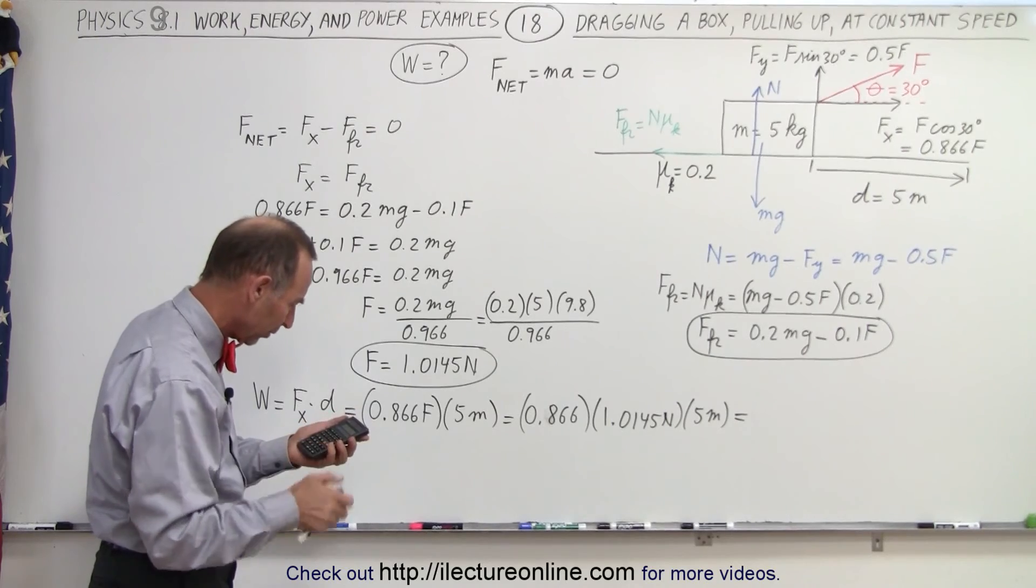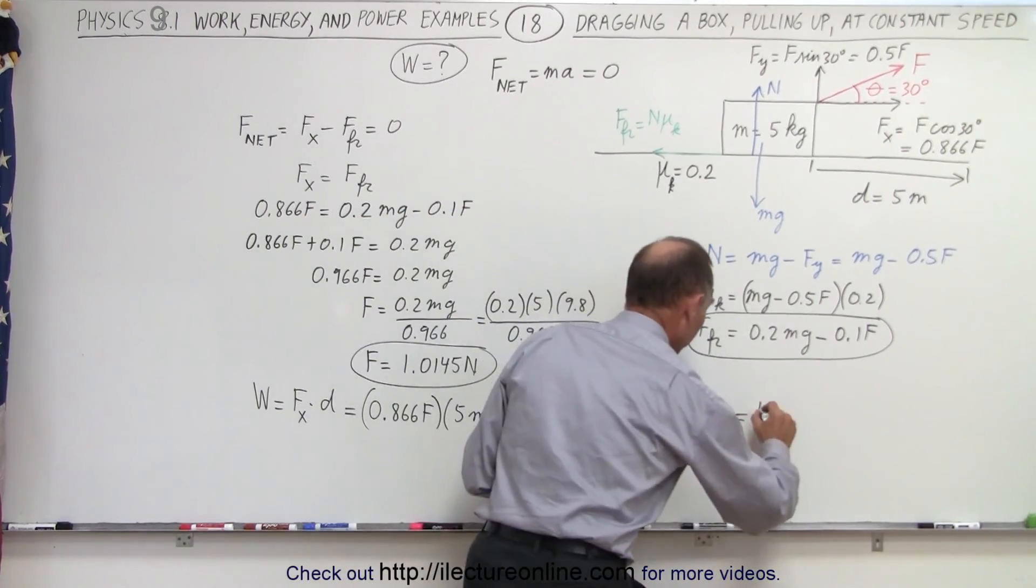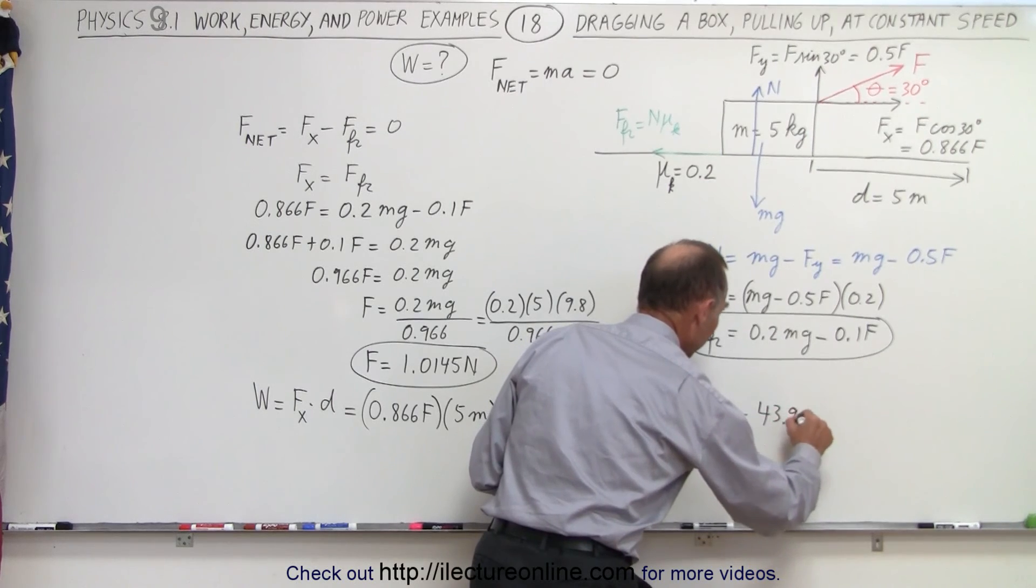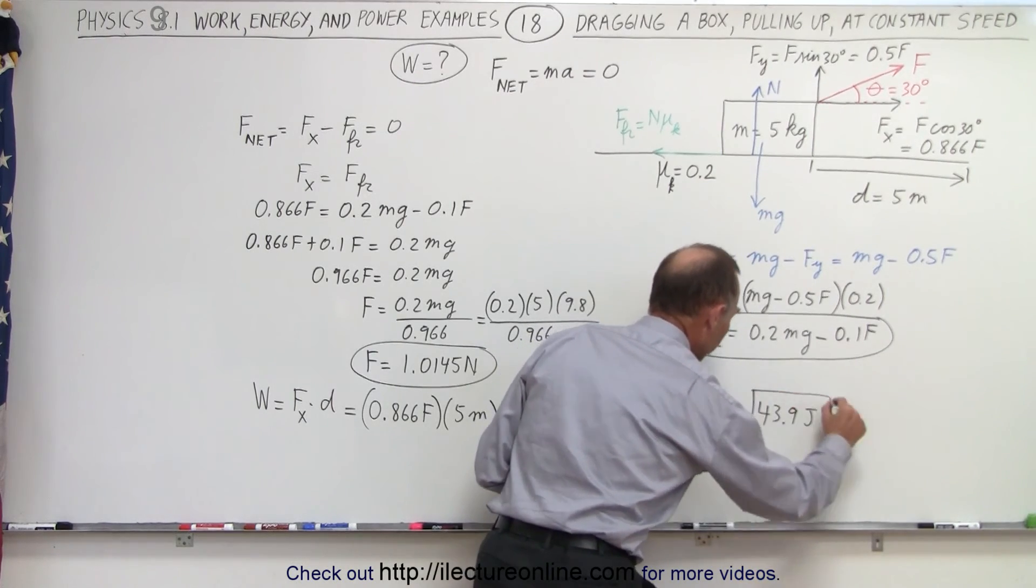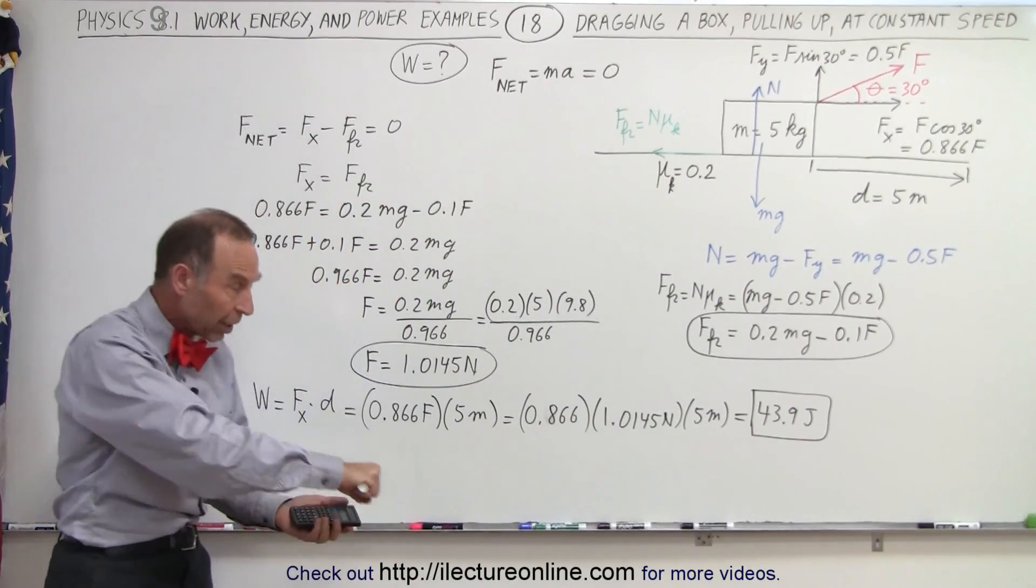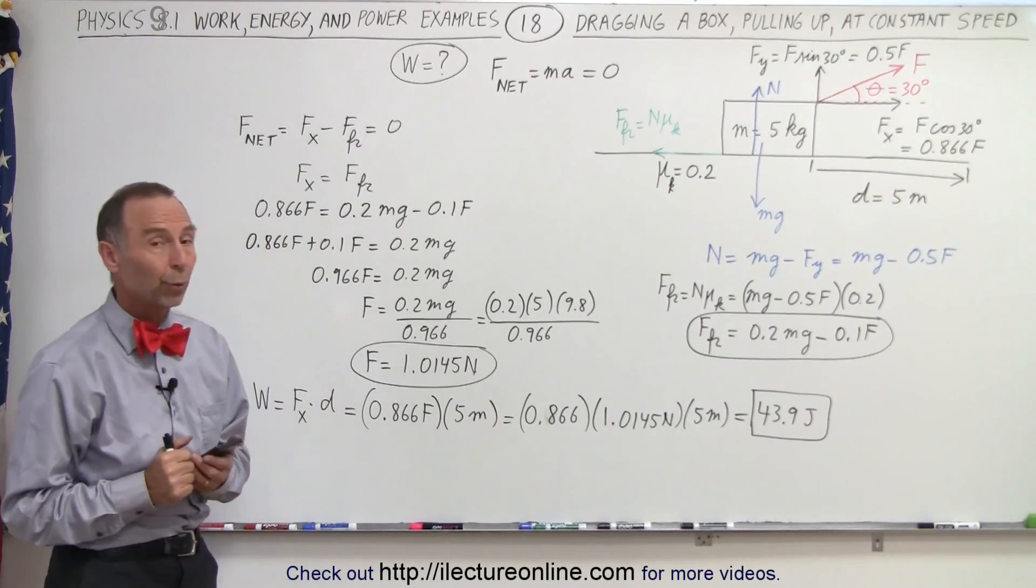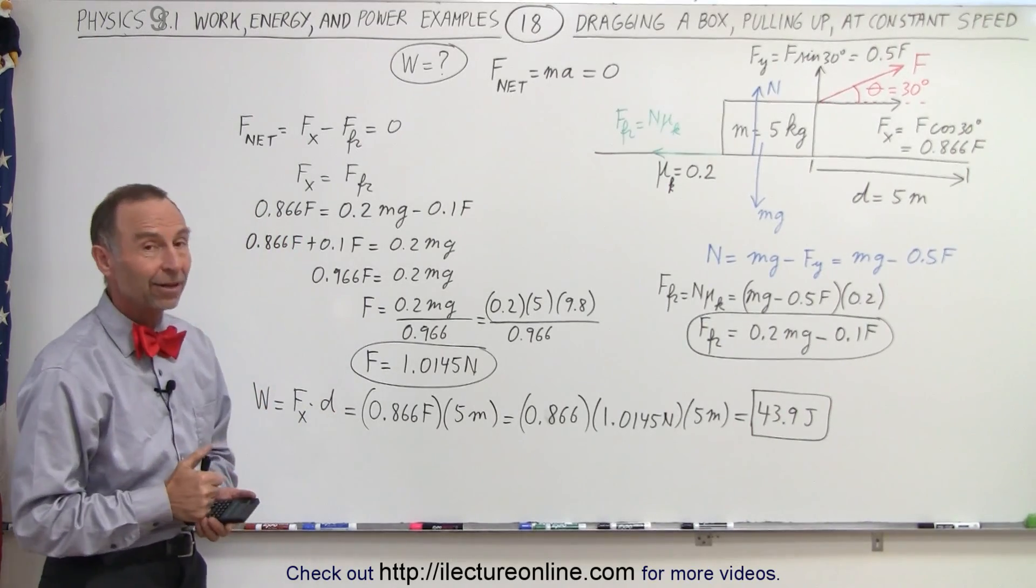We multiply that times 5 times 0.866 and we get 43.9 joules. 43.9 joules is the total work done to drag the box to the right 5 meters by pulling up at an angle of 30 degrees with a force equal to slightly over 1 newton. And that is how we do that.